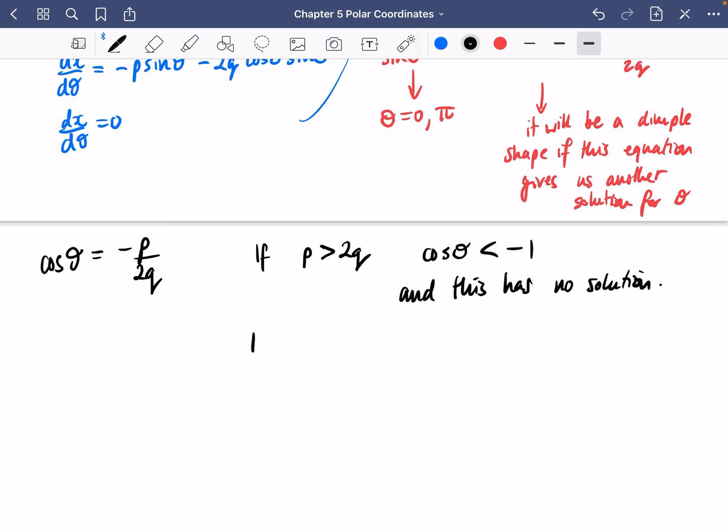Now we're going to check another one. What about if p is equal to 2q? Well, if p is equal to 2q, then we would have minus 2q over minus 2q, which is minus one. And when you solve this, you get that θ is equal to π. But this is already a solution. And it's already a solution from over here. So this still doesn't give a third tangent.